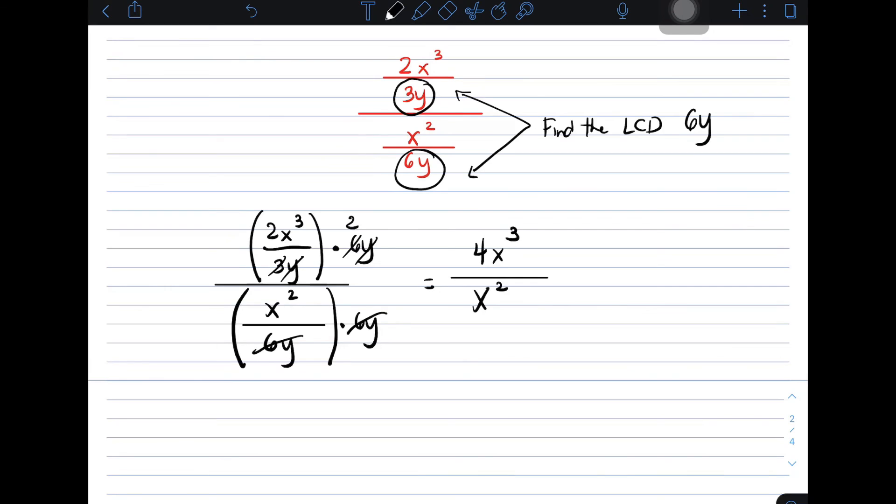And as you can see, you have the expression 4x cubed over x squared. We can cancel out x squared. And then, your x cubed becomes exponent 1. So, the final answer here is simply 4x. Using method number 2.